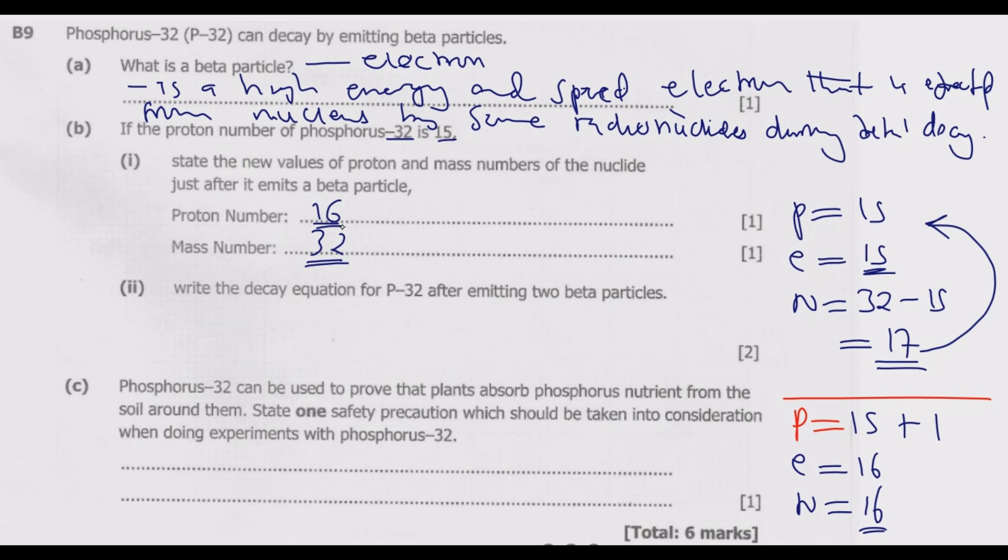Part (ii): Write the decay equation for P-32 after emitting two beta particles. We are writing the decay equation, so we start with phosphorus-32.